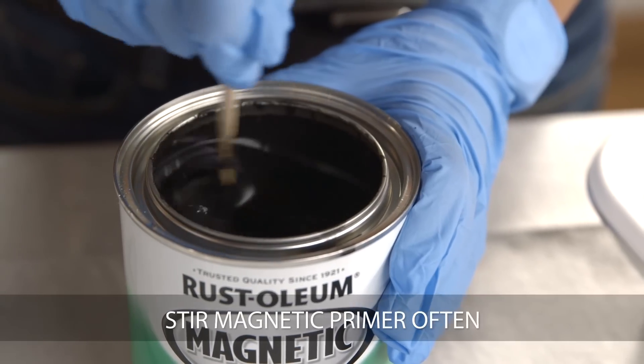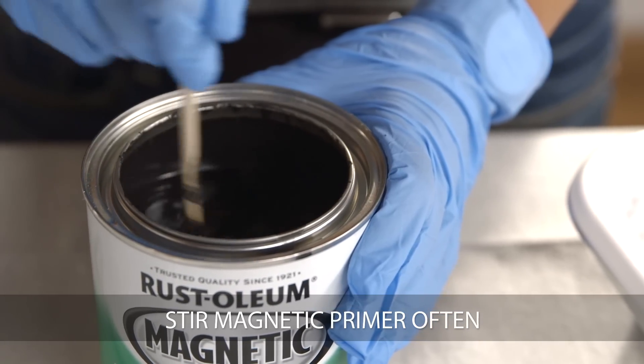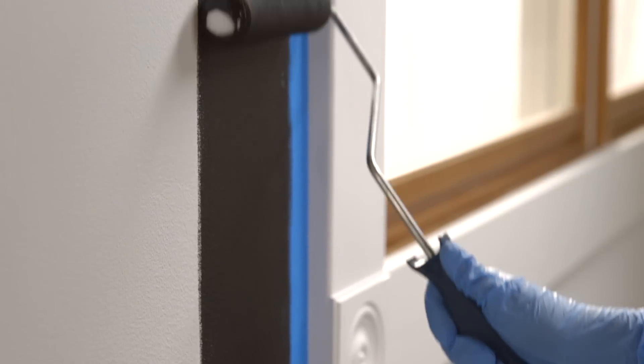Be sure to stir Magnetic Primer often during application to ensure uniform coverage. The first coat should be applied to completely hide the underlying surface.